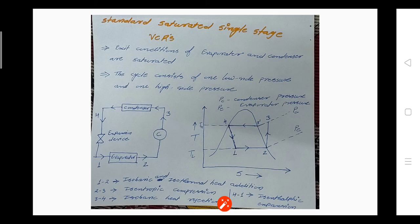Process 2 to 3 is isentropic compression — compression takes place at constant entropy. Process 3 to 4 is the isobaric, not isothermal, heat rejection process. Looking at the TS diagram, from 3 to 3-dash the temperature is decreasing, and from 3-dash to 4 the temperature is constant. The overall process from 3 to 4 has changing temperature but constant pressure. This isobaric heat rejection is the main difference between the Carnot cycle and the VCR cycle.